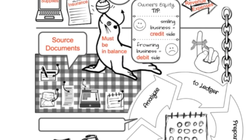Moving on to source documents. We have five images here that represent source documents. Source documents are the documents that represent the source — this is where the paper trail starts. Accounting is all about keeping track of where money comes from and where it's going. They are very detailed records for what's going on in terms of finances for the business. The first source document where the paper trail starts is a check.